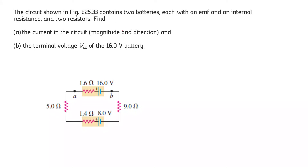In this question, we have to find the current in the circuit and also the terminal voltage across the 16-volt battery. There are four resistances connected in series across the circuit. The 1.6-ohm resistance is the internal resistance of the 16-volt battery, while the 1.4-ohm resistance is the internal resistance of the 8-volt battery.